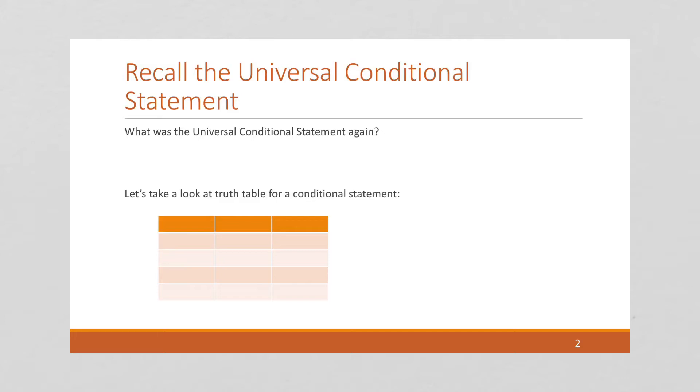So, one last thing before we start, let's recall the universal conditional statement, because when we do direct proofs, we're going to be using the universal conditional statement a lot. In fact, for everything we try to prove with the direct proof, we're going to first try to write it as a universal conditional statement.